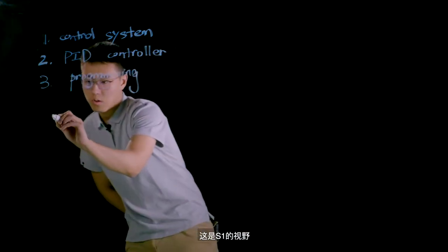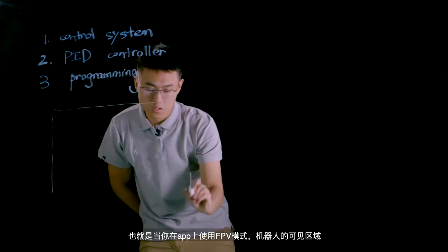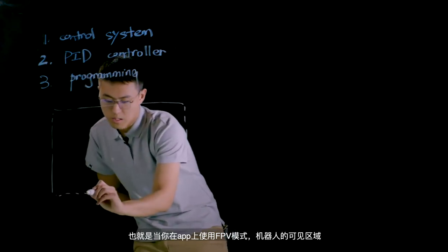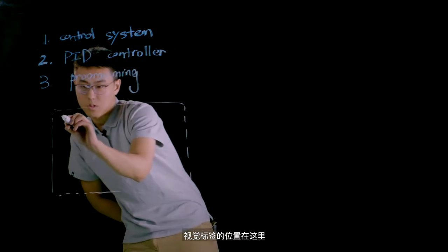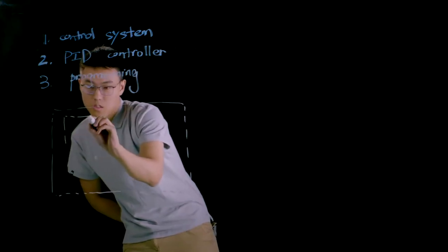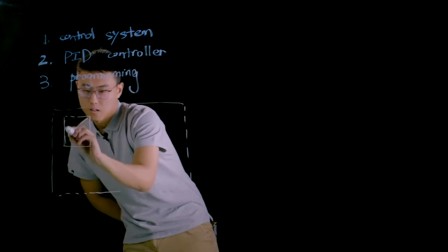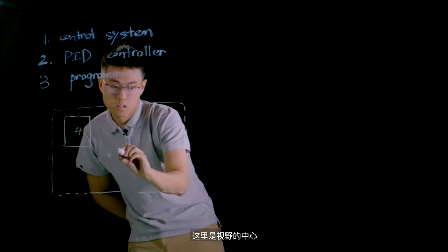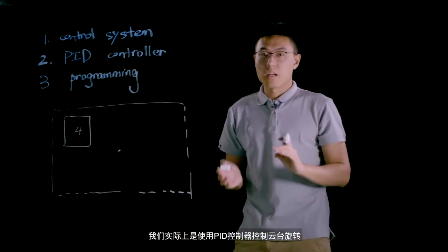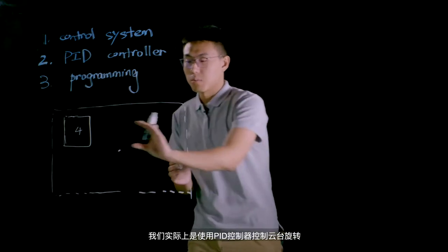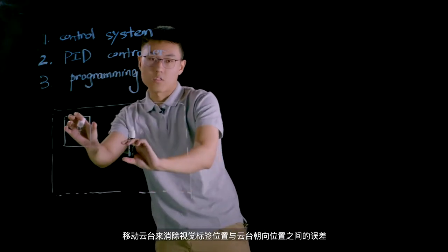So let's say if this is the viewport of S1, which is the area the S1 can actually see from the camera. And let's say the visual marker is over here. And here's the center of the viewport. So actually we need to use the PID controller to move the gimbal to eliminate error between the position of visual marker and the center of the viewport.